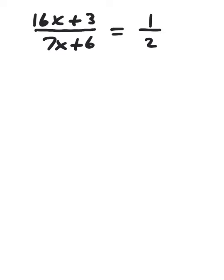There are special occasions when you have an equation with fractions where you can kind of bypass multiplying by a least common denominator. For example, in this equation, 16x plus 3 over 7x plus 6 is set equal to 1 half. If you run across a situation like this where you have one fraction equals to one fraction, then you can use a technique called cross multiplication.